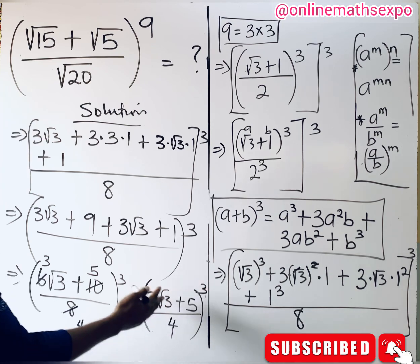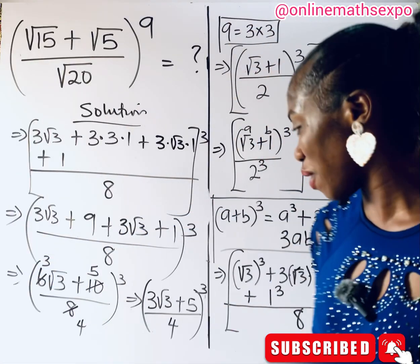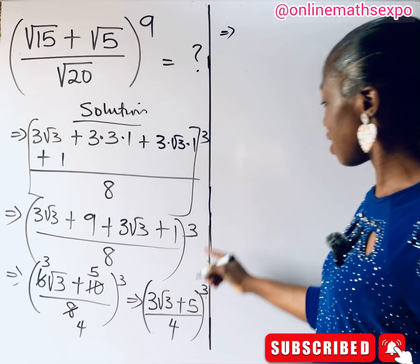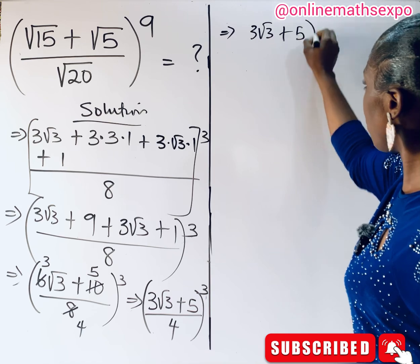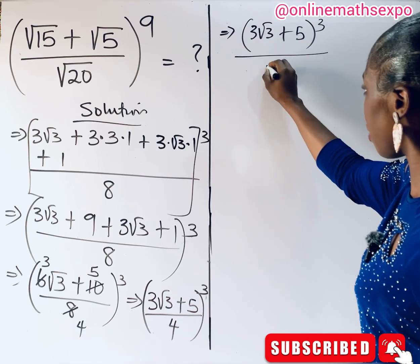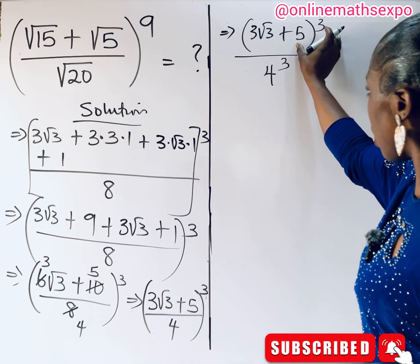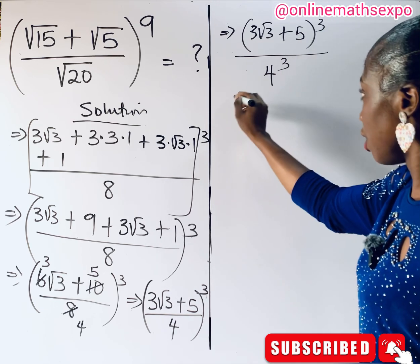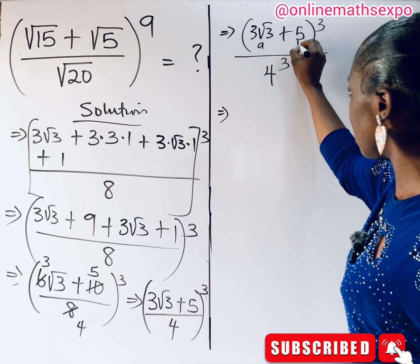We still need to raise this to the power of 3. Applying (a/b)^3 = a^3 / b^3 again: (3√3 + 5)^3 divided by 4^3 = 64. Now we expand (3√3 + 5)^3 using the binomial expansion with a = 3√3 and b = 5.